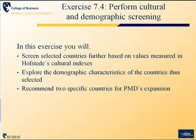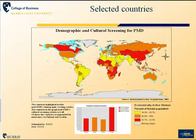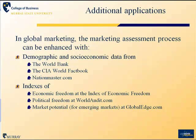In step four of the chapter, you will perform both cultural and demographic screening to identify countries that meet the demographic characteristics you want to serve, and add the cultural factors from Hofstede to come up with a set of two specific countries. You will identify in a layout view those countries that match both screening criteria and develop a map which illustrates where those countries are and shows in graph form why you selected the two countries that you have.